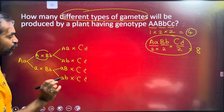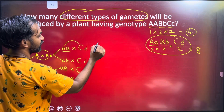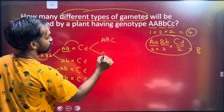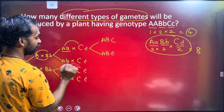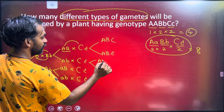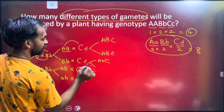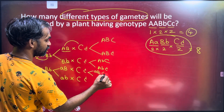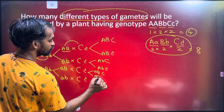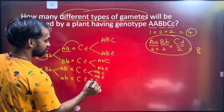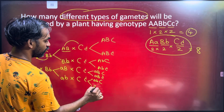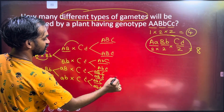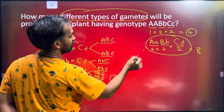Now listing all gamete combinations with capital C and small c: capital A capital B capital C, capital A capital B small c, capital A small b capital C, capital A small b small c, small A capital B capital C, small A capital B small c, small A small b capital C, small A small b small c. 1, 2, 3, 4, 5, 6, 7, 8 — 8 types of gametes. This is how they are formed.